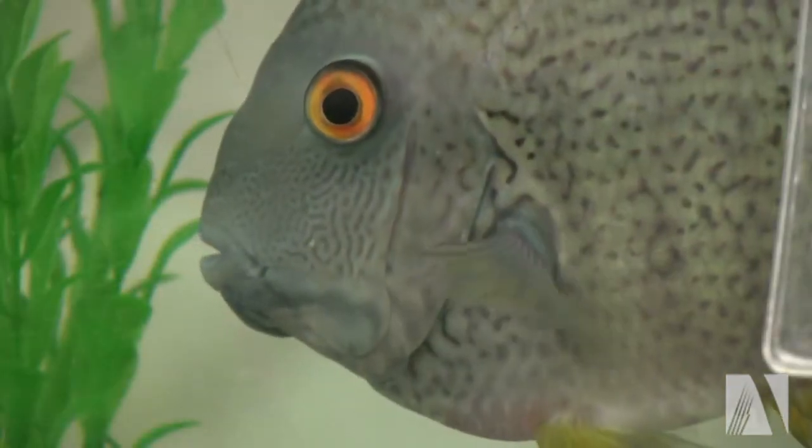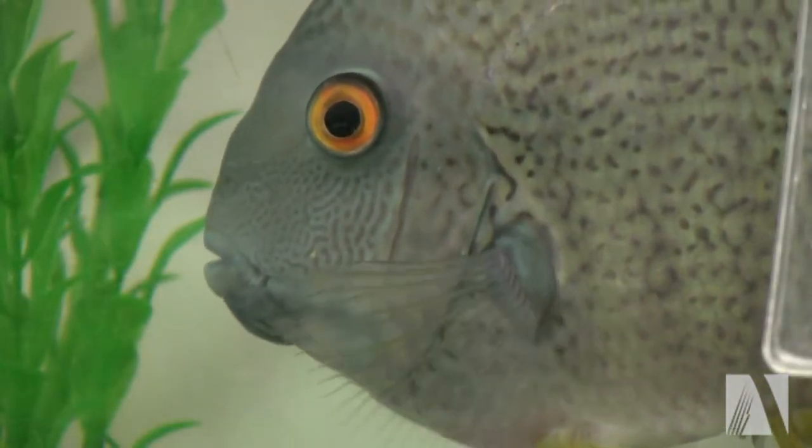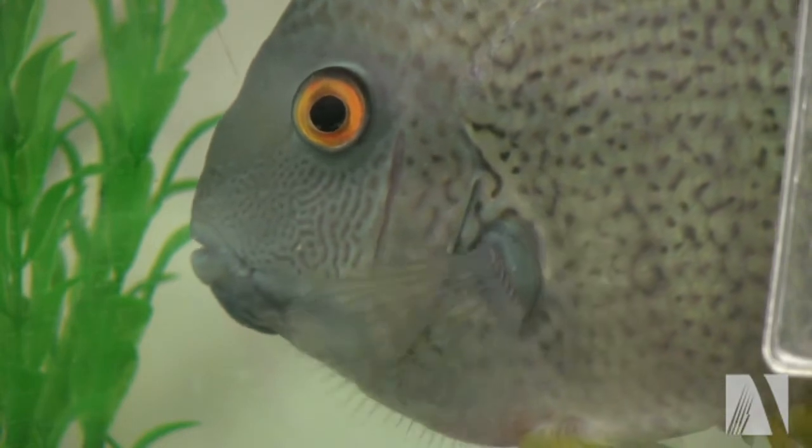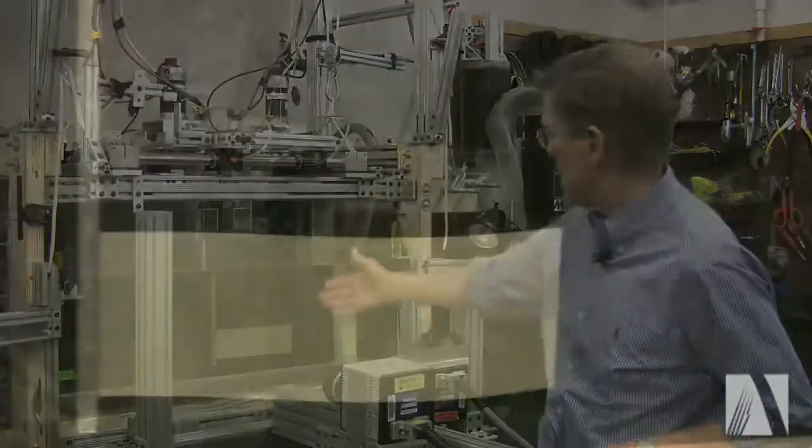And then we study a variety of robotic devices that we've built based on principles learned from the fish. And the device you see in the background here actually is a simple robotic controller that moves a flapping membrane, a simple membrane that you can see here suspended in the flow tank.